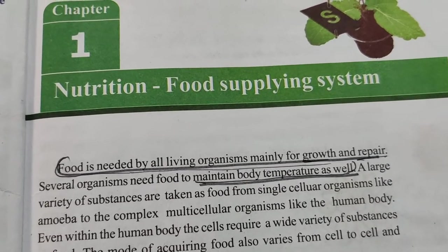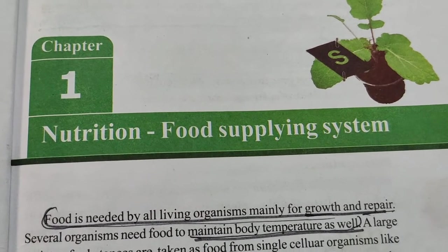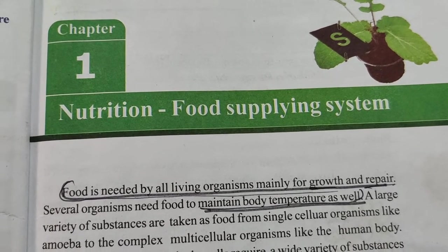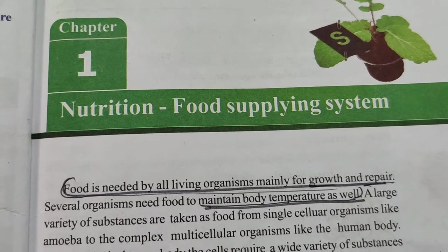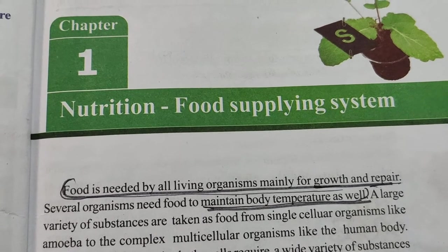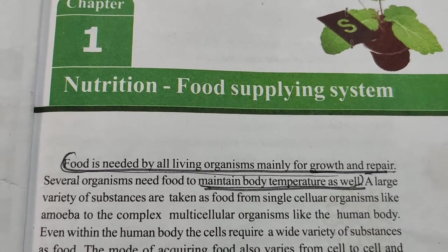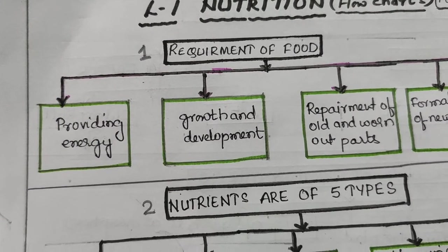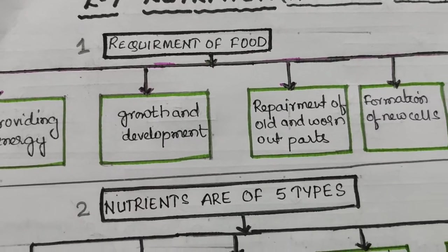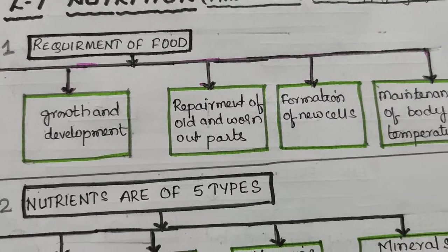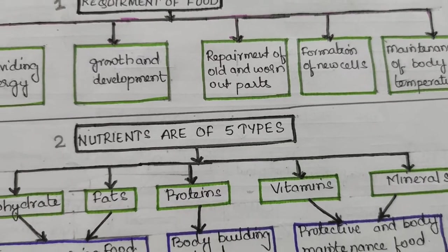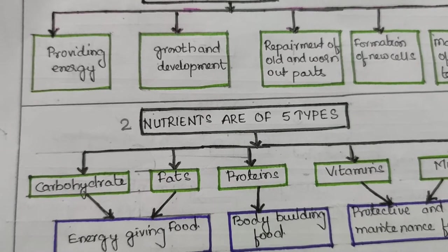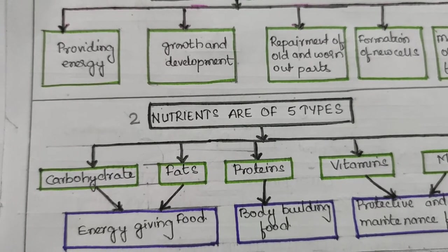The first lesson is nutrition — that is a food-supplying system. How does the organism get nutrients from food? How they acquire this food is known as nutrition. The requirements of food include: providing energy, growth and development, repair of all worn-out parts, formation of new cells, and maintenance of body temperature.